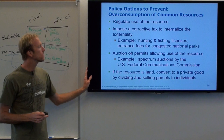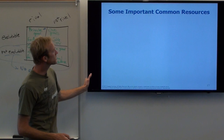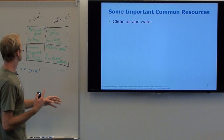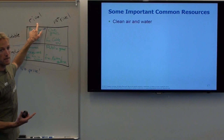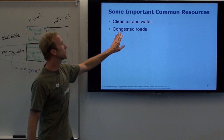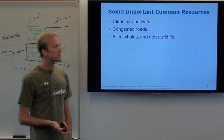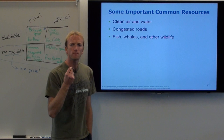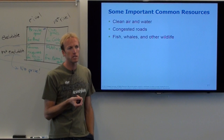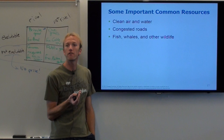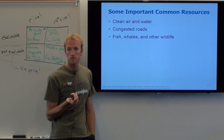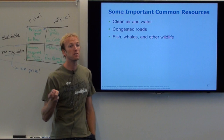Examples of common resources: clean air and water — rival in consumption and not excludable. Congested roads — a common resource that gets overused, which is why freeways are crowded. Fish, whales, and other wildlife. The biggest current application of the common resource problem is overfishing: we can't exclude people from fishing, so everybody rushes to catch as many fish as they can as fast as they can before everyone else does. That's why we're running low on fish in the ocean.